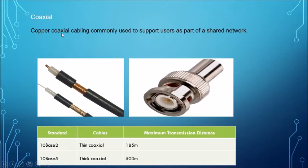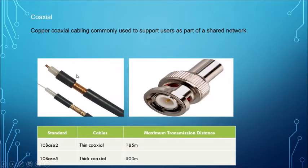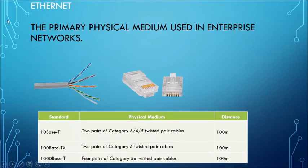First let's understand what coaxial cable is. It is made up of copper — coaxial cable is basically a copper wire cable — commonly used to supply users as part of sharing in networks. It is of two types: 10Base2 and 10Base5. 10Base2 is thin coaxial, which has a maximum transmission distance of 185 meters. 10Base5 is thick coaxial, which can transmit up to 500 meters. On the left-hand side you can see a thin coaxial cable and on the right side there is a thick coaxial cable.